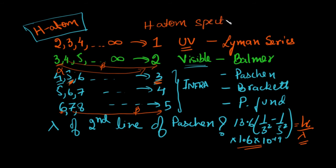To summarize the naming: the first line of the Balmer series is 3 to 2, the second line is 4 to 2. You can also call them the alpha line (3 to 2) and beta line (4 to 2) of the Balmer series. This is what is known as the hydrogen atom spectra.